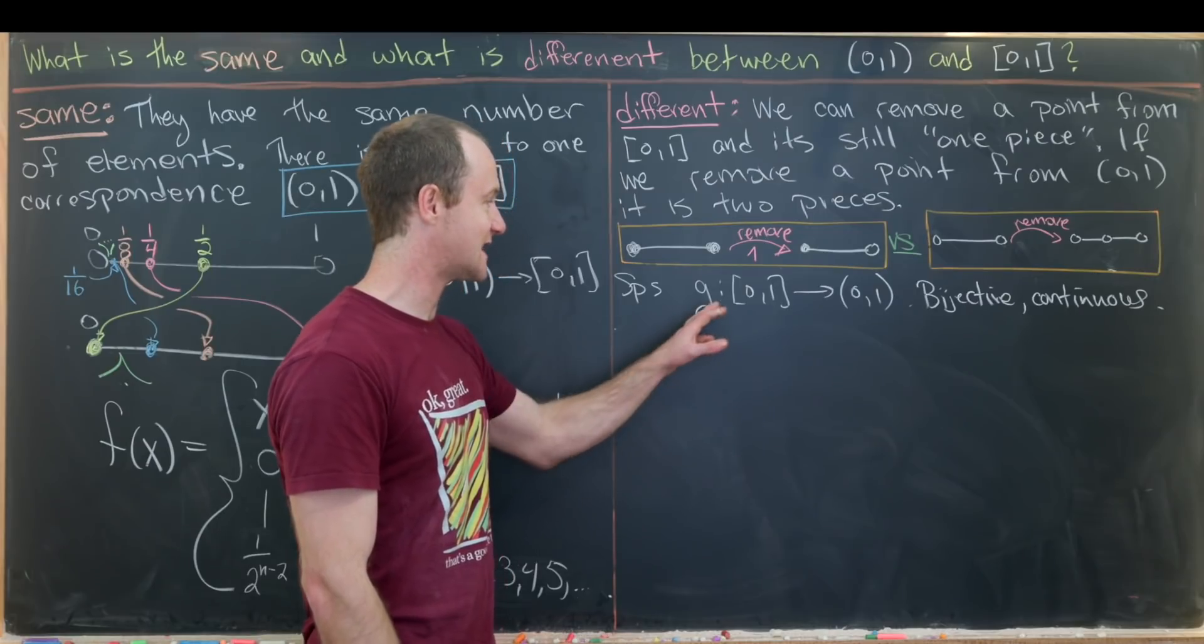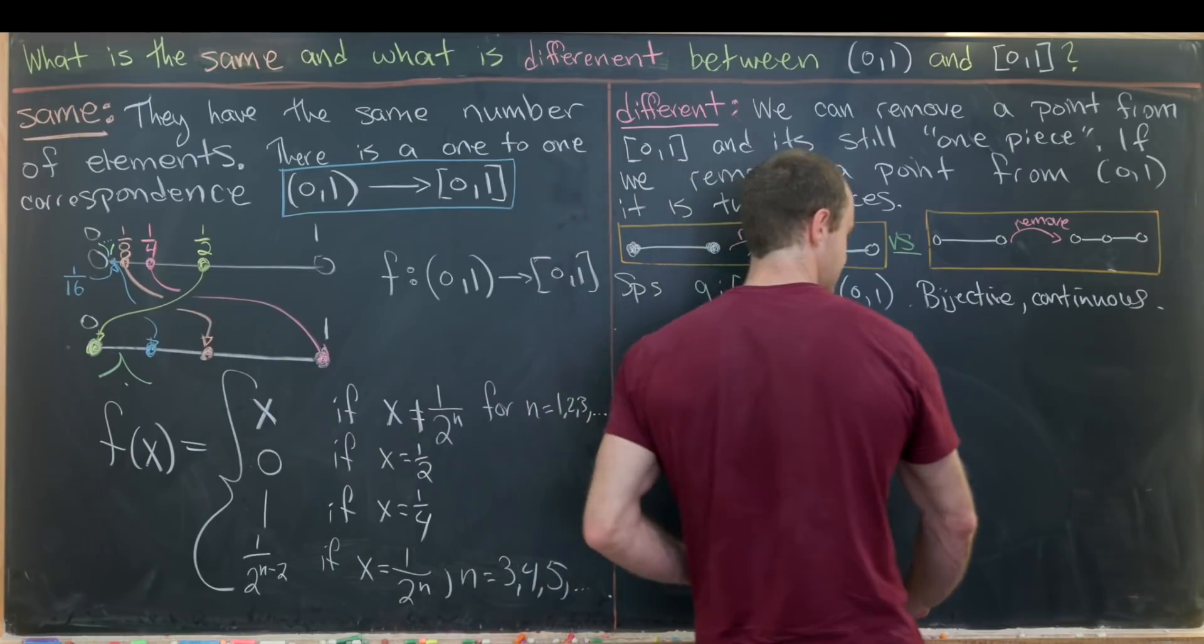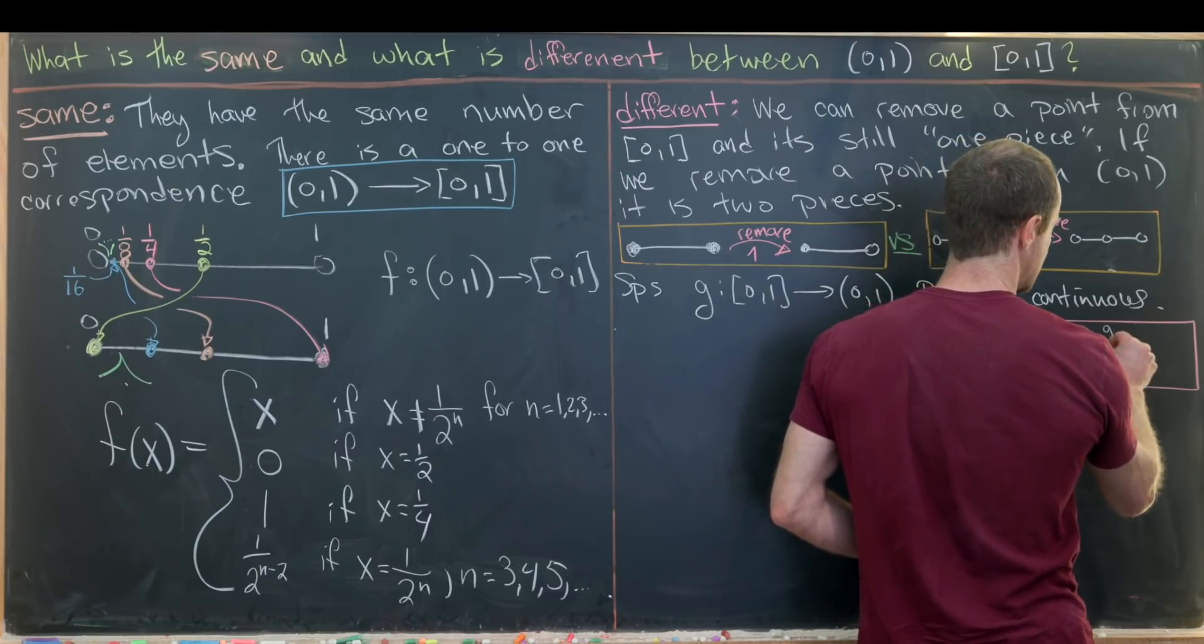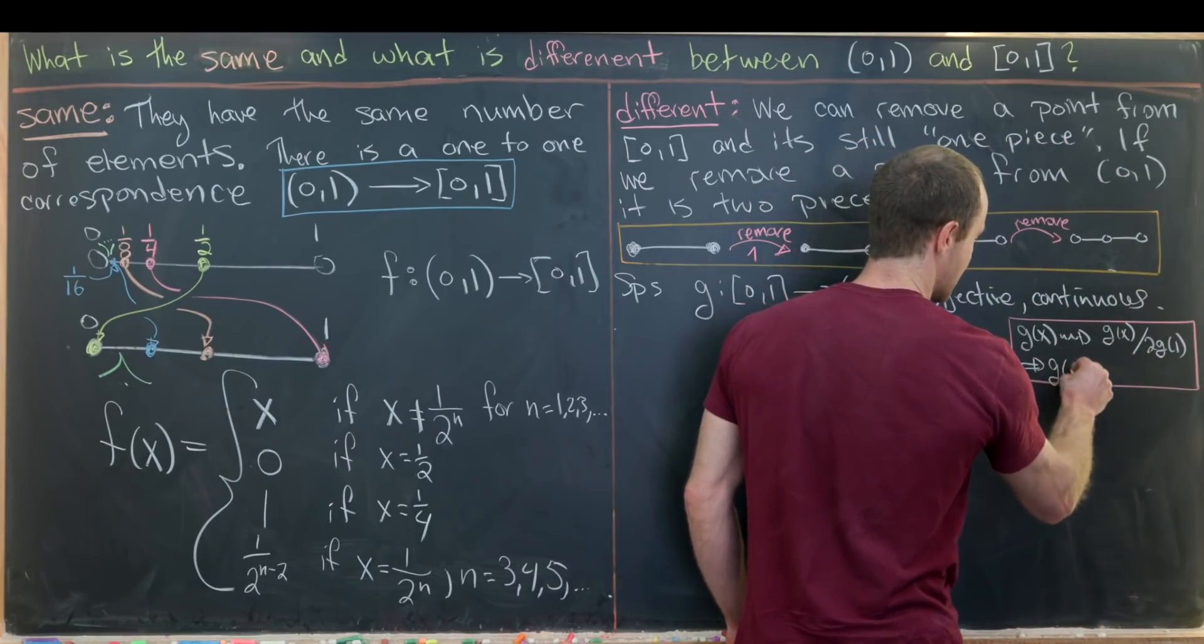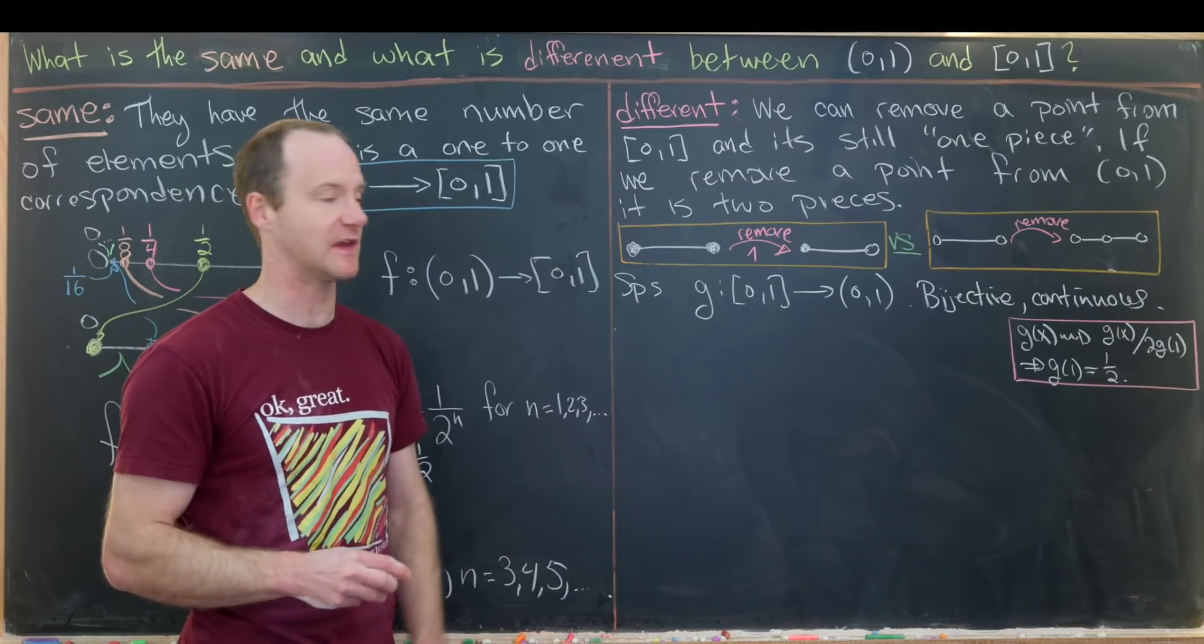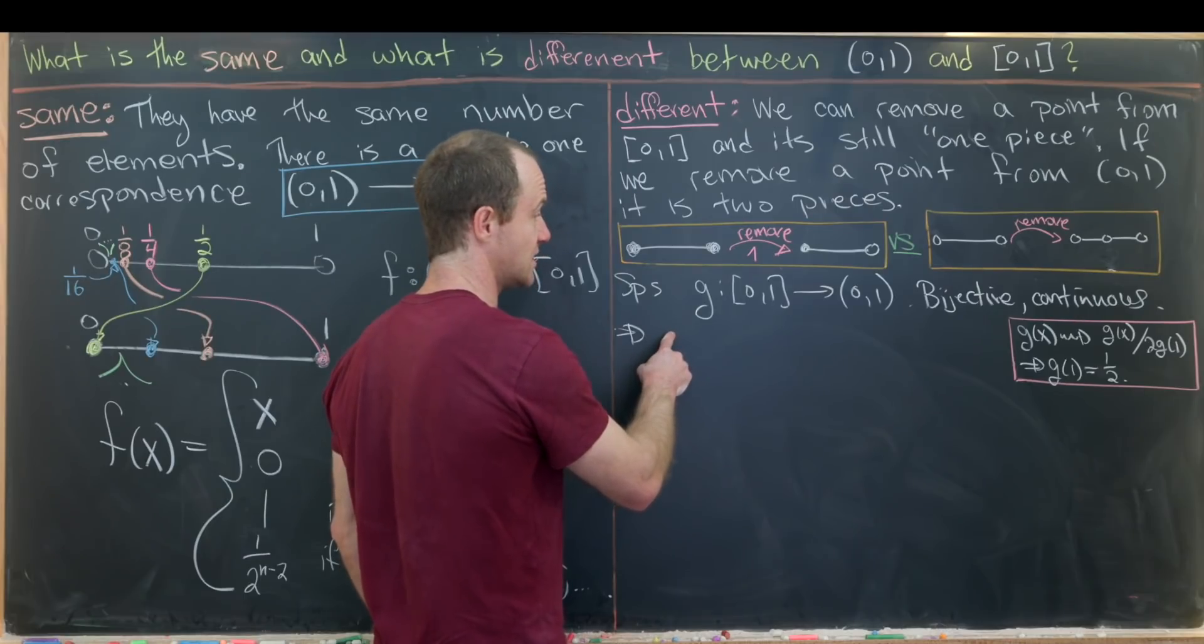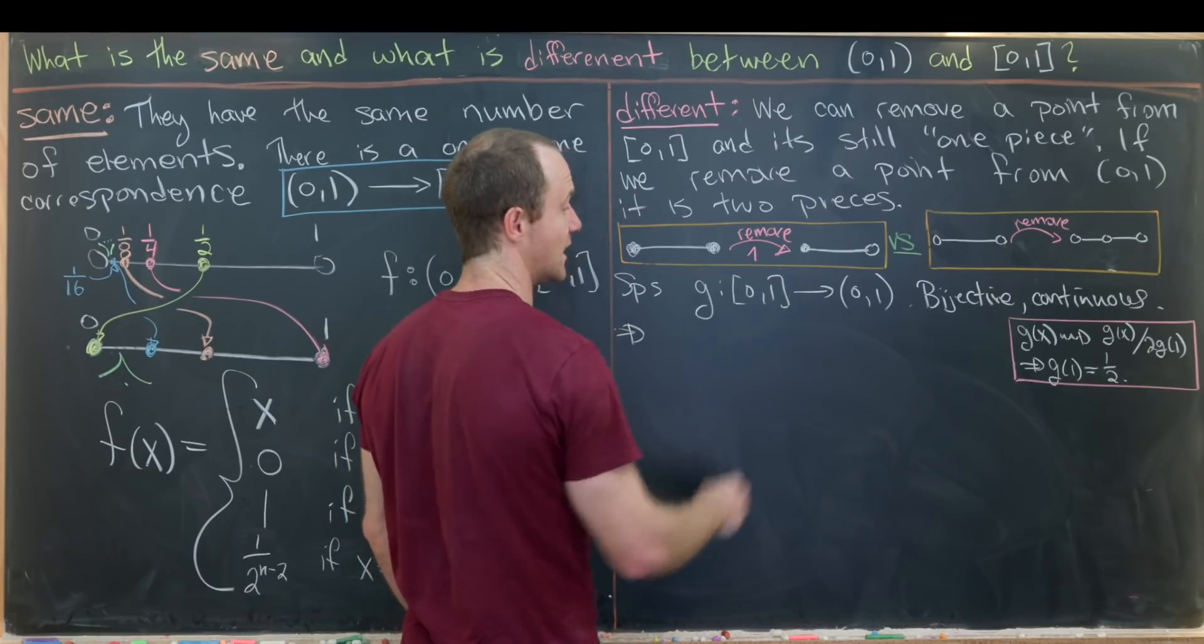Another thing that we want to do is scale this function g so that g evaluated at 1 is equal to 1/2. So let's maybe explain kind of how we can do this. So we're going to replace g(x) with g(x) over 2 times g(1). And notice that means that g evaluated at 1 is equal to 1/2. And we don't really need to do this. It just kind of makes everything work out nicely. But since this g from [0,1] to (0,1) is bijective and continuous, so is the restriction which goes from closed 0 to open 1 to (0,1) minus {1/2}.